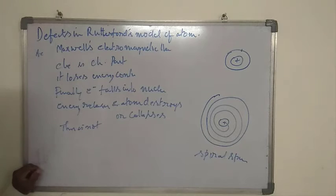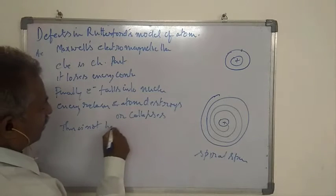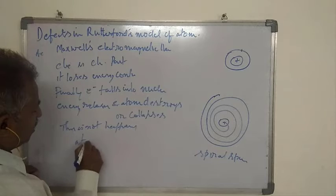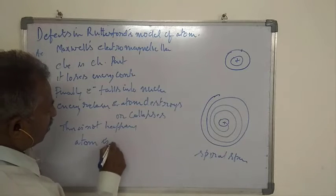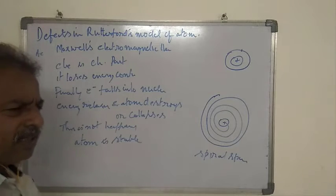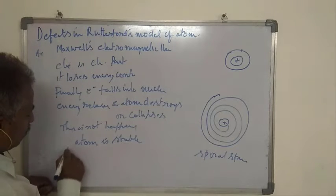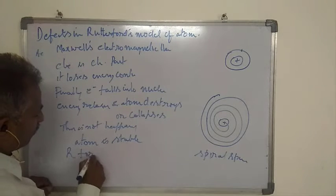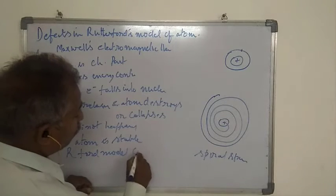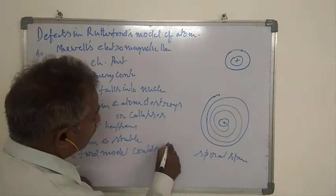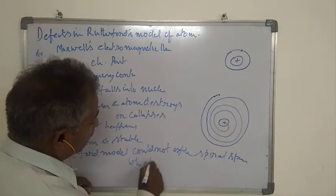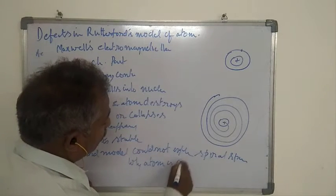Because life is possible, this is not happening. That means atom is stable. Rutherford's model could not explain why atom is stable.